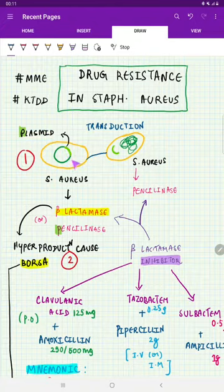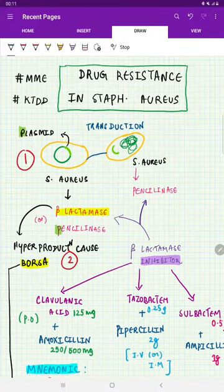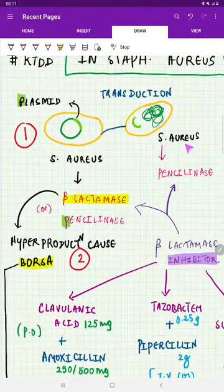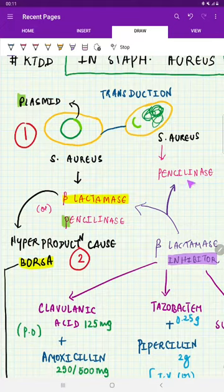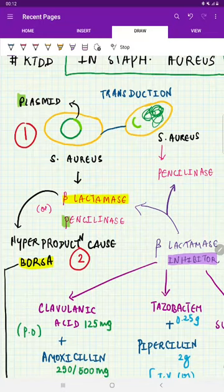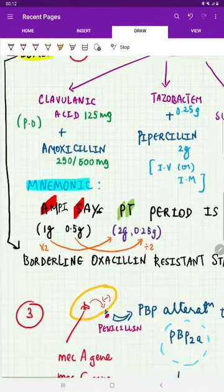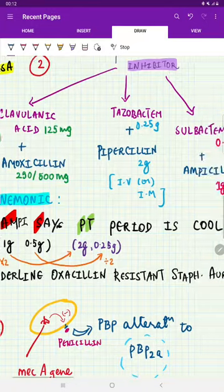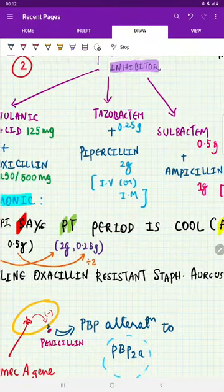This is going to transmit this plasmid to the other by transduction. By doing this, this bacteria is also producing Penicillinase. This Penicillinase is going to completely destroy the Penicillin so that the action of Penicillin is hampered. There is another condition where there is hyperproduction of this beta-lactamase or Penicillinase, and this condition is called BORSA, which means borderline oxacillin-resistant Staphylococcus aureus.